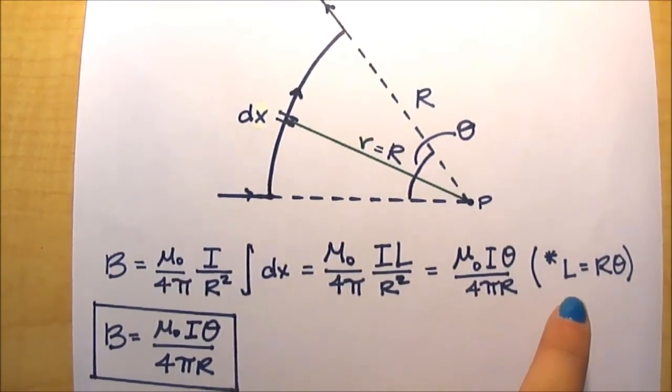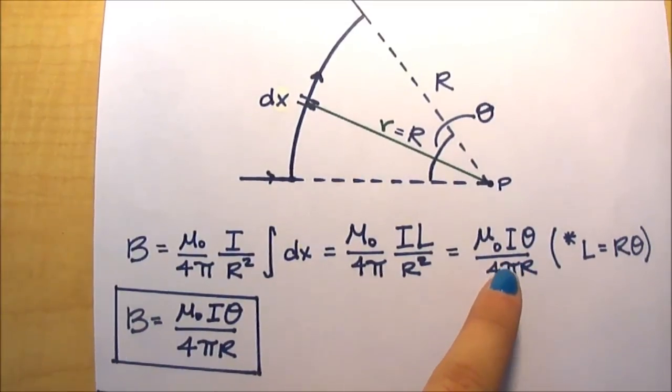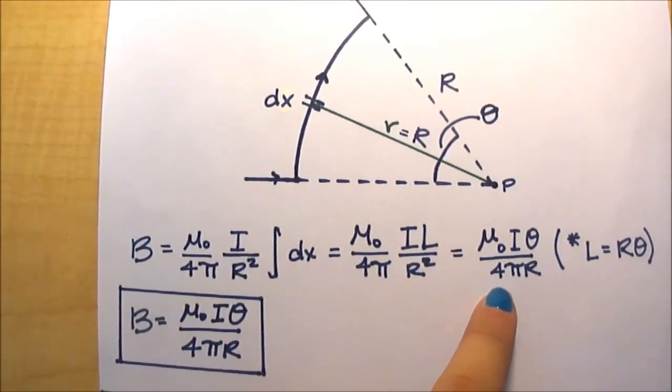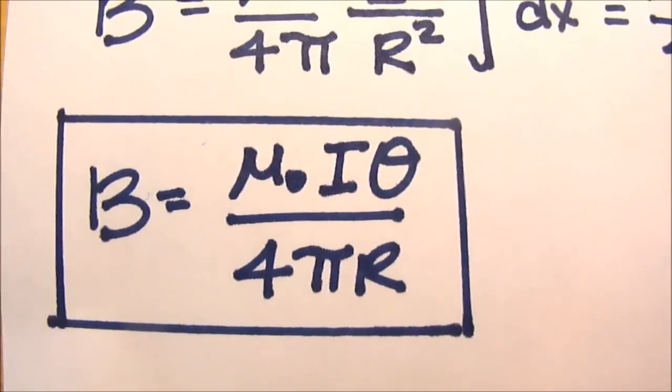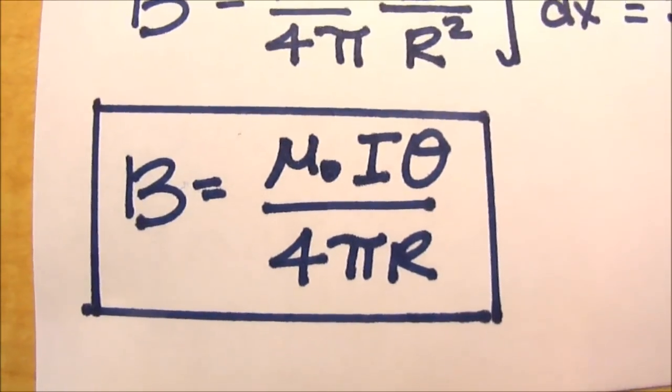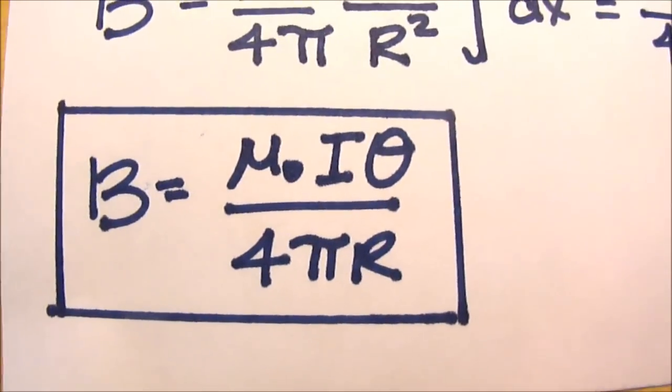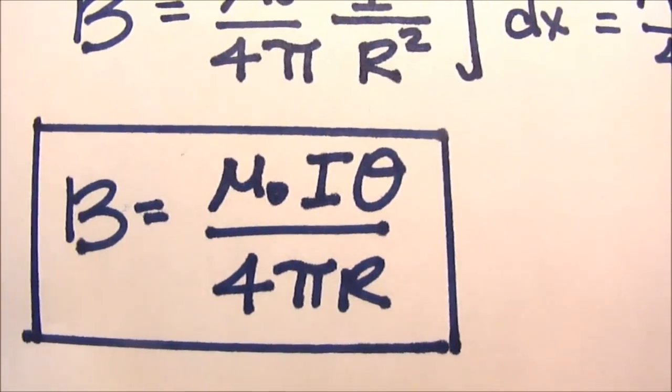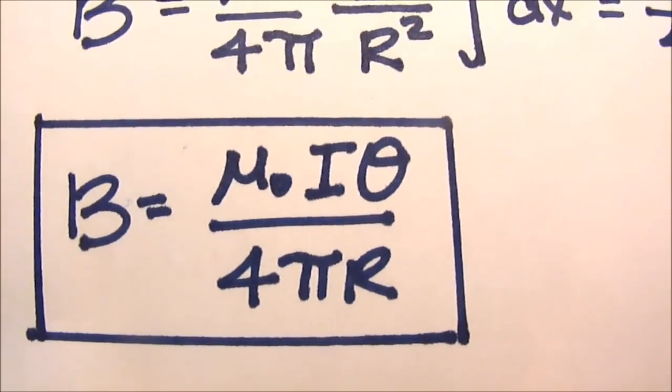Now since L equals Rθ, if you plug in Rθ for the L, it can simplify to this. Now as our answer for part A, an expression for the magnetic field at the center of the circular arc in the figure is B equals μ₀Iθ over 4πR.